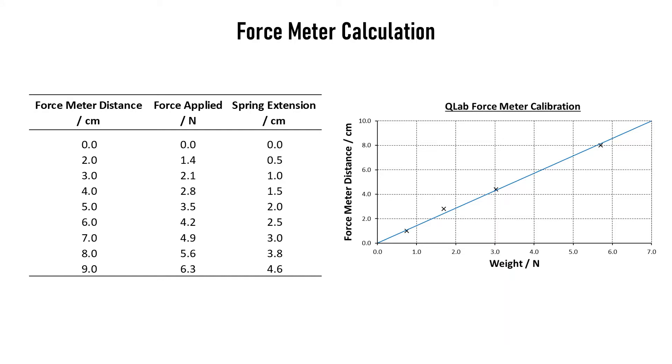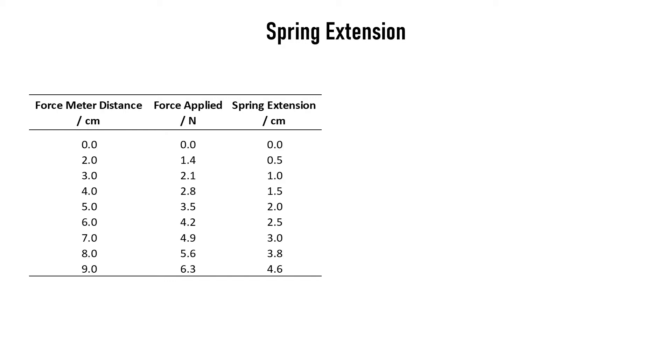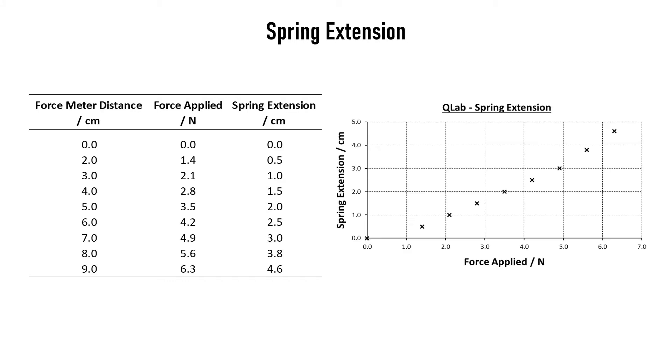Then what we'd want to do is plot a graph where we look at how much the spring extended when we applied different forces. It will look a bit like this. It's very important to remember that the force applied, that was our independent variable. We knew what that was. We were setting it. But the spring extension, well that depended on what we were doing. So that was our dependent variable. And we were measuring that one. So we'd have our spring extension on the y-axis and the force applied on the x-axis.